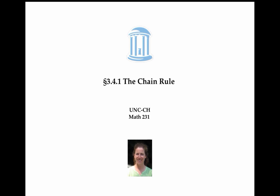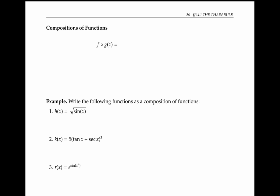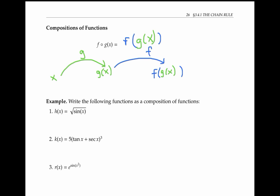The chain rule is a really useful method for finding the derivative of the composition of two functions. Let's start with a brief review of composition. F composed with G means that we apply F to the output of G. As a diagram, this means we start with x and apply G first, then we apply F to the output to get our final result. I'm going to call G the inner function and F the outer function, because G looks like it's on the inside of F in this standard notation.